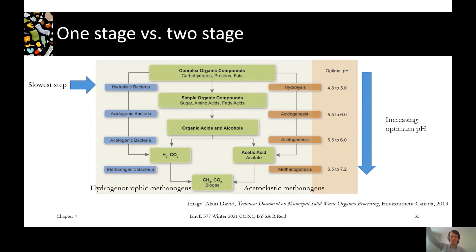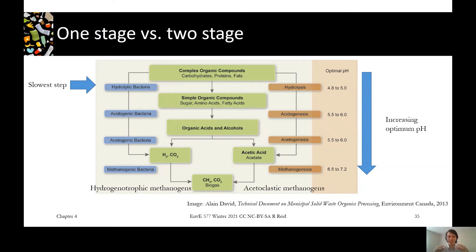So now we've got our complex molecules going through hydrolysis into simple molecules, then acidogenesis into organic acids, then acetogenesis into acetate. We also produce a little bit of hydrogen and CO2 at this stage.